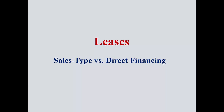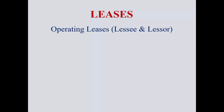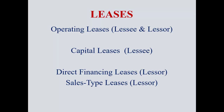For leases, the determination of a sales type versus a direct finance lease is fairly simple. If it's an operating lease, it's called the same thing on the lessee and the lessor side. On the lessee side, the person leasing it, the tenant, they simply call it a capital lease. But on the lessor side, the owner or the landlord, they need to determine: is it a direct finance lease or a sales type lease?